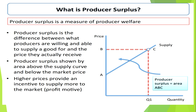अगर price के case के अंदर देखें कि producer surplus क्या होता है, तो price के case में producer surplus होता है — एक producer होता है, वो अपने product को sell करना चाहता है, sell करने के लिए वो सोचता है कि मैं अपने product को किस price पर sell करूँ और actual में उसको price क्या receive होती है — वो होता है producer surplus in case of price.